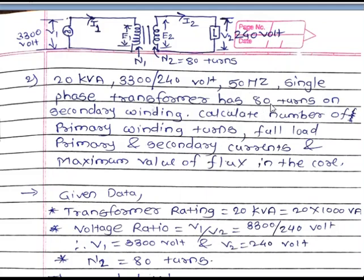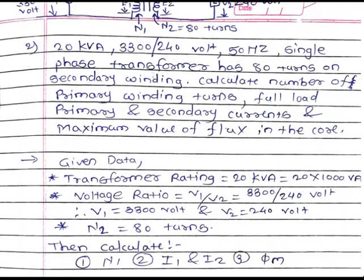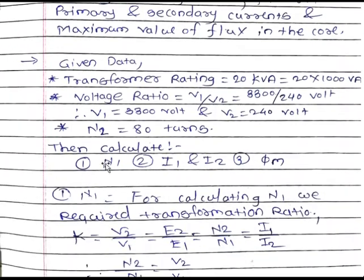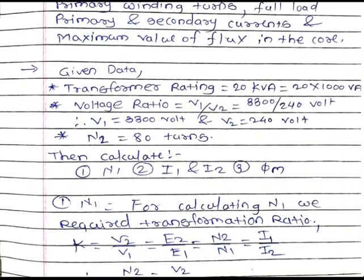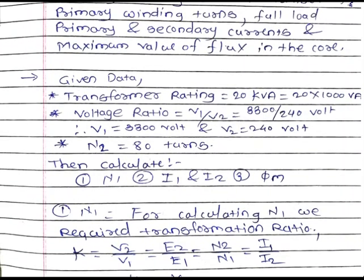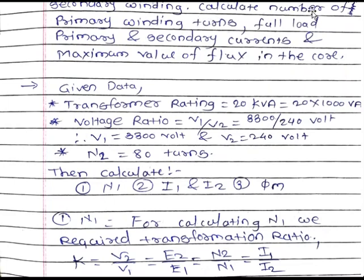The single phase transformer has 80 turns on the secondary winding. The secondary winding turns are denoted by N2, primary current by I1, secondary current by I2, and we also need the maximum value of flux, that is calculation of φM.